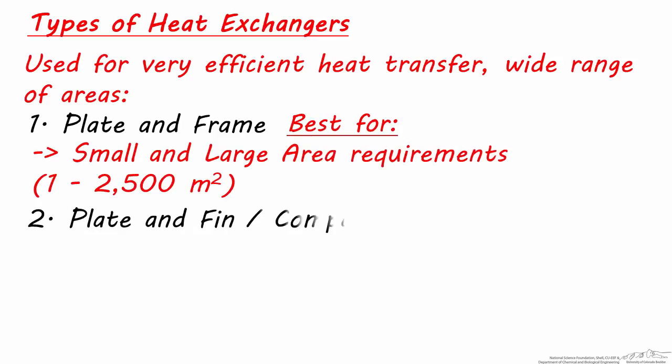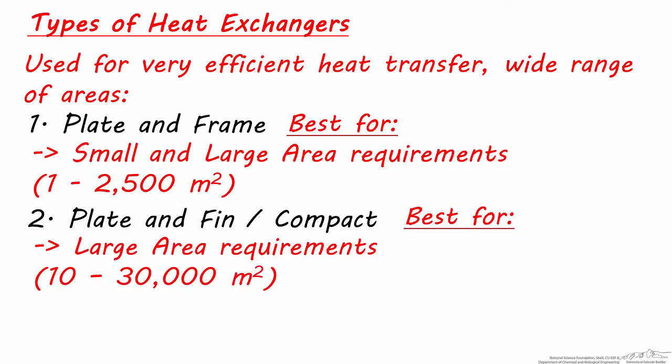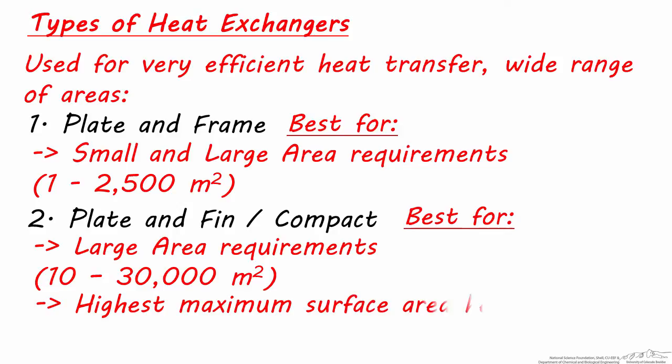However, the plate and fin, also called a compact heat exchanger, accommodates an even wider range, up to 30,000 meters squared. The plate and fin is considered the highest maximum surface area heat exchanger of all the main types.